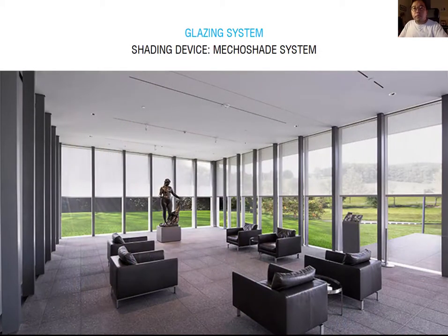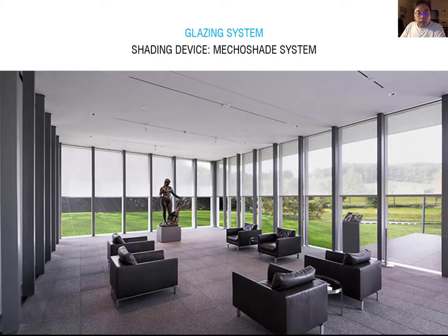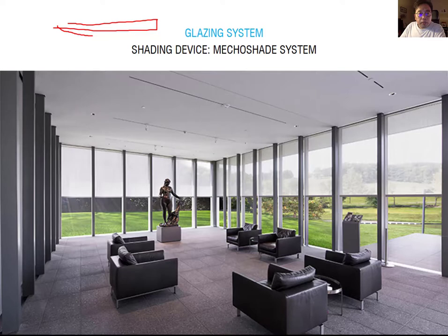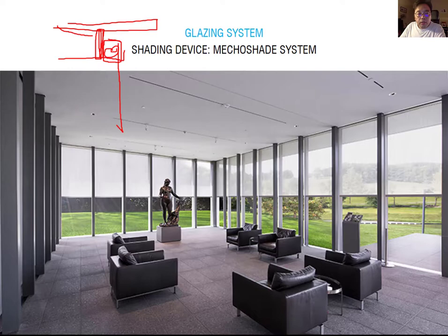The first shading device system is the macro shading system. The macro shading system is the most popular automatic shading device. It is recessed into the ceiling. When you design some slabs, you're probably designing a drop ceiling, and you design the gypsum board wall. You usually add in this macro shading device, which totally sits under this drop ceiling zone. From there, you can design the gliding system.